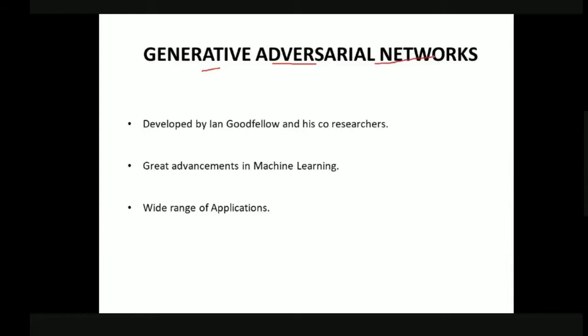Generative Adversarial Networks, in short called GANs (G-A-N), were developed by a researcher called Ian Goodfellow along with his co-researchers. GANs are considered great advancements in the field of machine learning and have a wide range of applications.